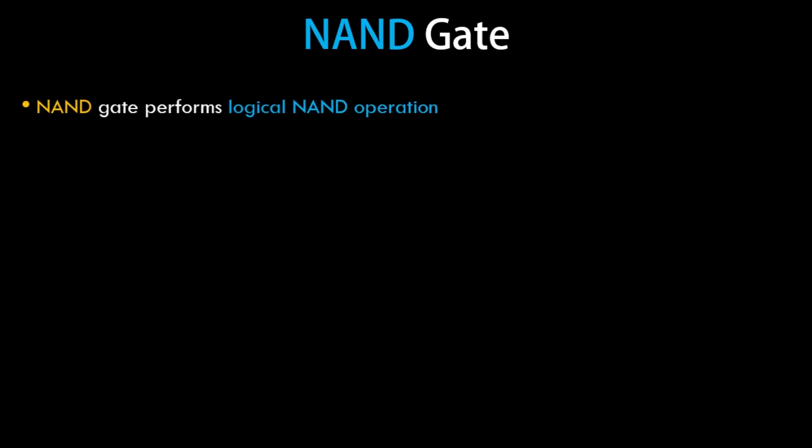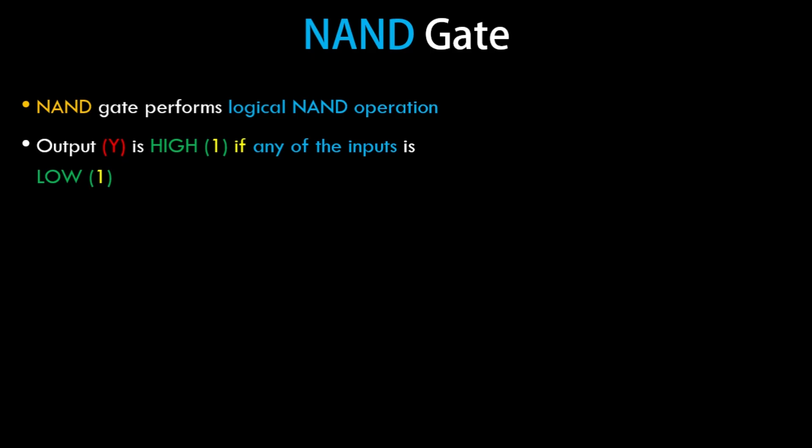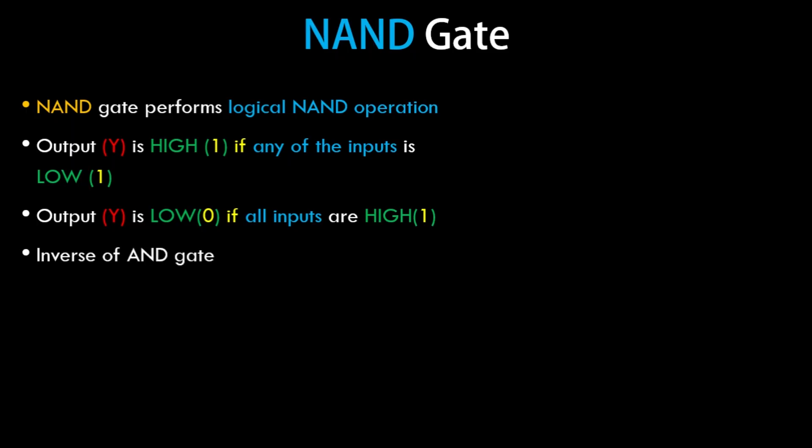A NAND gate performs a logical NAND operation. This NAND operation is exactly opposite to the logical AND operation. If you've missed the basic operations — that is the AND, OR, and NOT operations — you can check them out in the previous video tutorials from this playlist. The output Y of a NAND gate is high if any of the inputs is low, and the output is low if all the inputs are high. This is the inverse of AND gate operation.